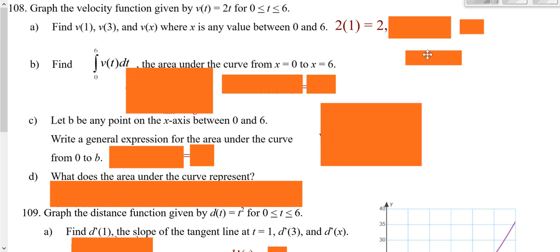Then you're asked to find your velocity when you plug in 3, so it'd be 2 times 3, which is 6. And then you're asked for finding your velocity when you plug in x, so it would be 2 times x.